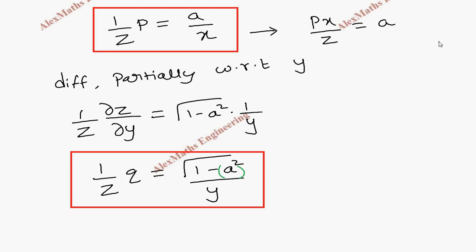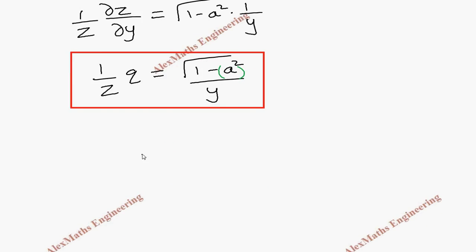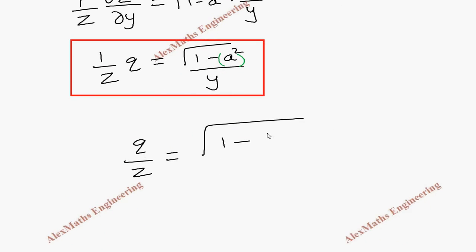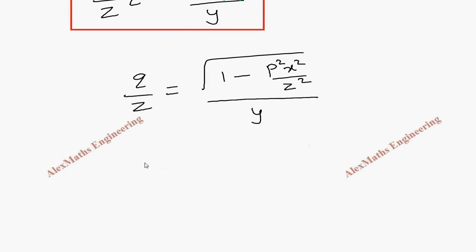So it is q/z equal to √(1 - a²x²/z²) / y. If I cross multiply, it is qy equal to z into √, inside the root, let's take LCM. So z² is LCM. So z² minus p²x².